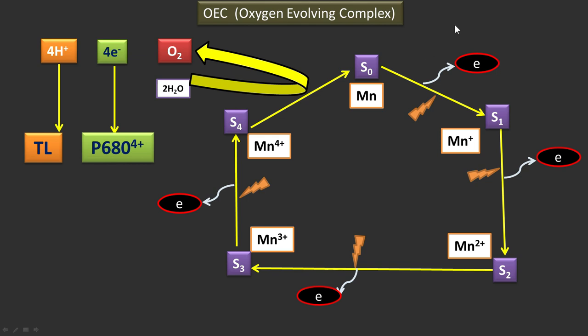Now let's test how much you have understood about oxygen evolving complex. Oxygen evolving complex is located on: D1 protein of PS2, D2 protein of PS2, iron center protein of cytochrome B6F, or tyrosine residue.